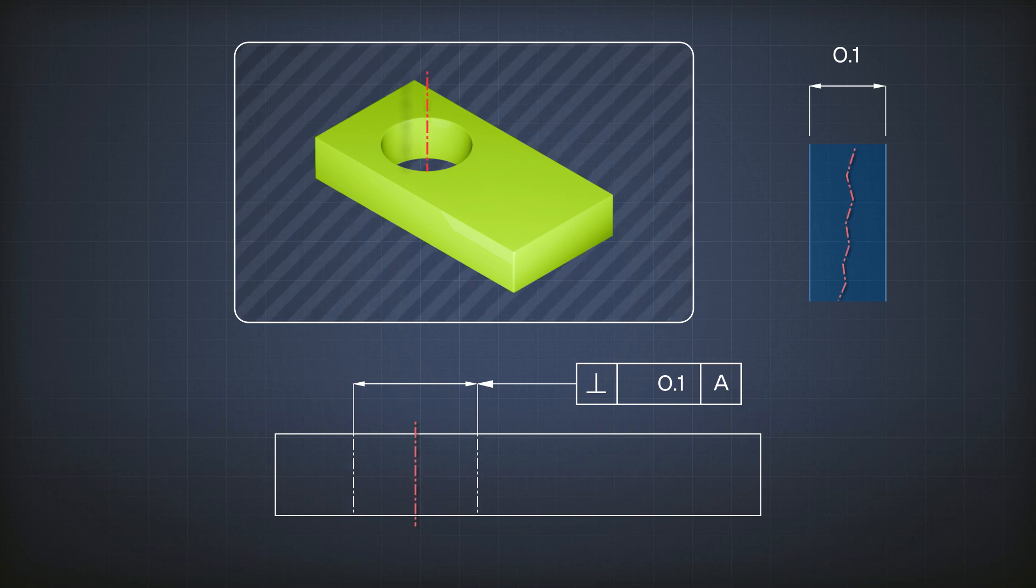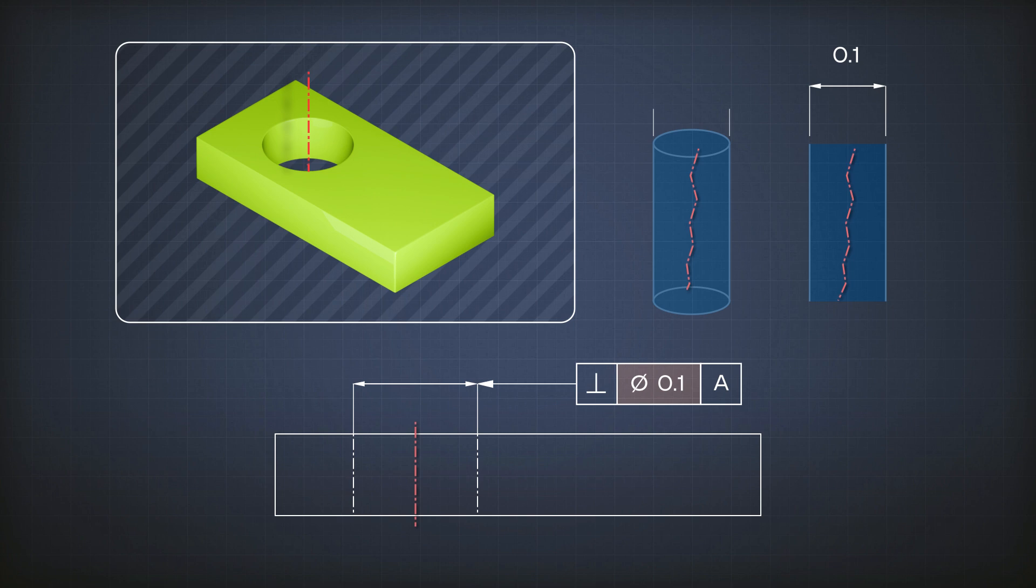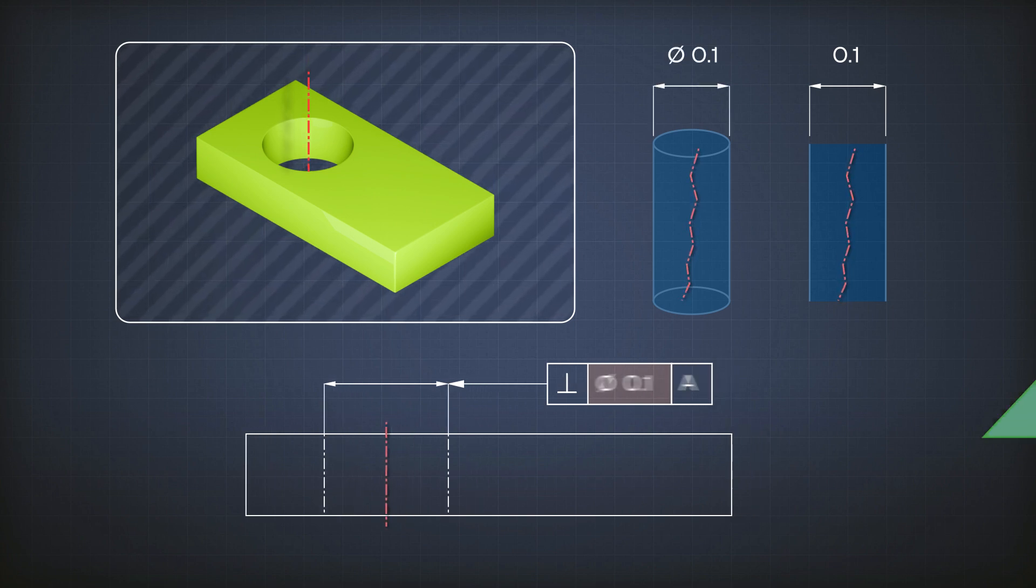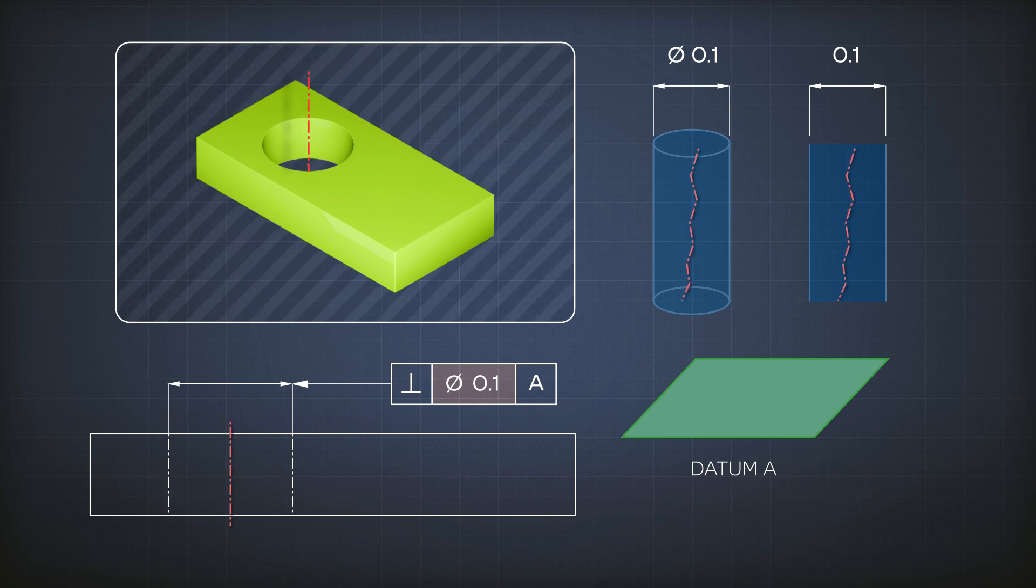If I want to say it has to be a cylinder, so I want to tolerate it in all directions, then I should add my diameter sign. What this means is there should be a cylinder here with a diameter of 0.1, and the cylinder is perpendicular to surface A, and any point on the axis or centre line of the hole should lie inside the cylinder.